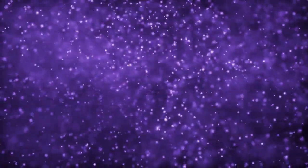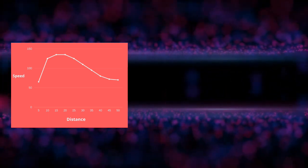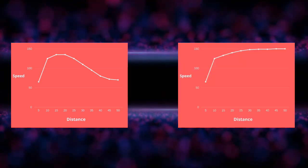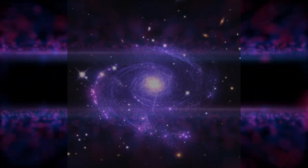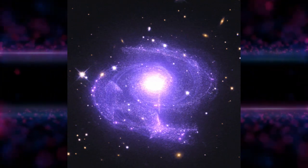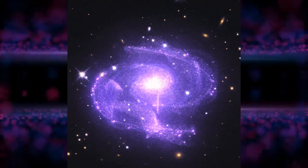This graph shows expected star speeds around the galaxy depending on their distance from the galactic center. The weird thing is that this is what was actually observed, which confused and shocked scientists. There is an easy fix though: if galaxies had extra mass that just couldn't be detected, it would fit the data perfectly.